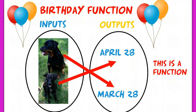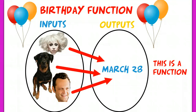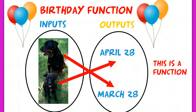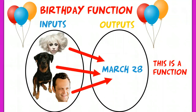Tank's birthday is on March 28th. Walt's birthday is on April 28th — I made that up. This represents a function: your input has exactly one output. Tank has one output — his birthday on the 28th — and Walt has one output — his birthday on April 28th. Now, that's not to say more than one person can't share the same birthday. Lady Gaga, Vince Vaughn, and Tank all have the exact same birthday on March 28th. Multiple inputs with the same output — that's okay.